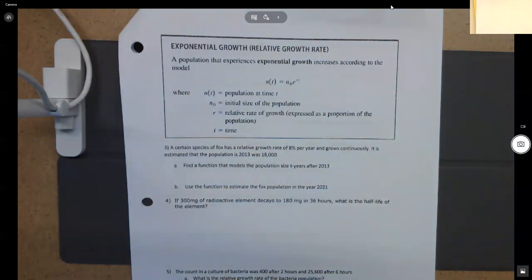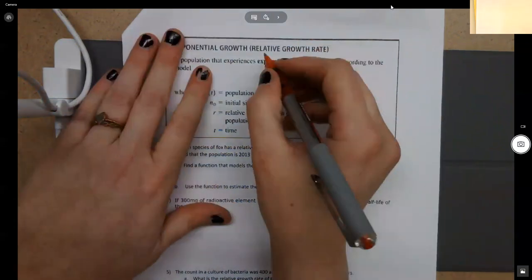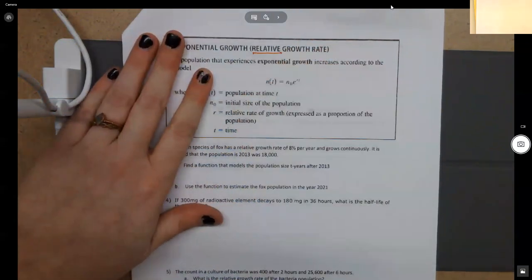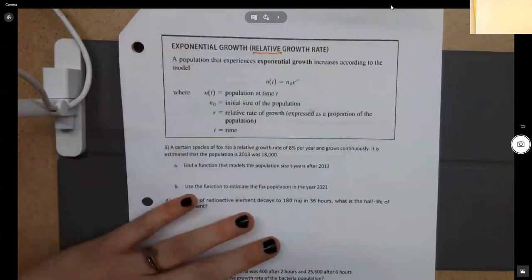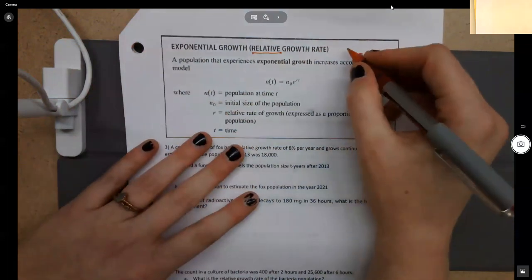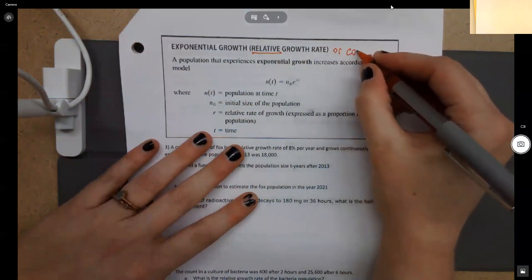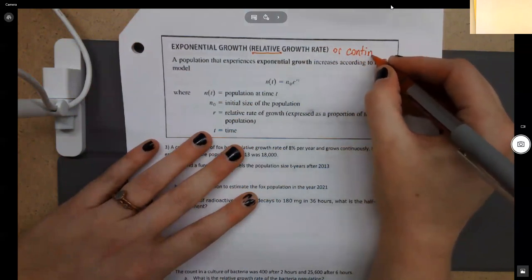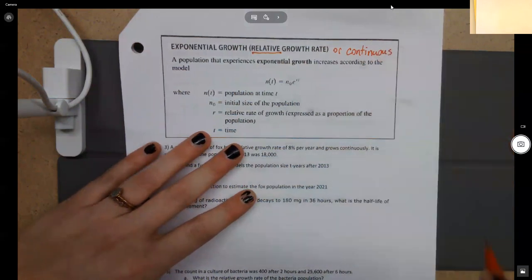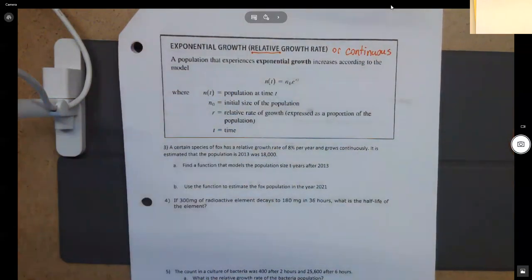...one of the words that you need to look out for is relative growth. So in the problem, they'll state the relative growth. Or another word that they'll use is continuous. So basically if you see either of those words relative or continuous, that's a good indication that you're going to have to use this formula.